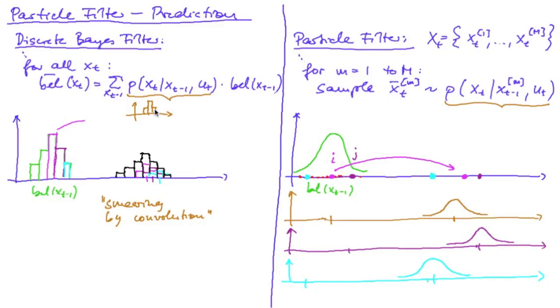And now you see what we achieved here by a convolution with those probabilities is achieved here by a sampling from this distribution. So again, non-scientifically, we could say we do a smearing by sampling. But the smearing is controlled by exactly the same term in the particle filter and in the discrete Bayes filter.